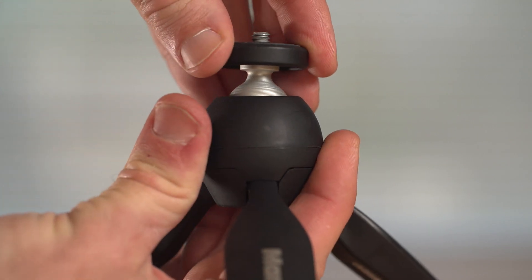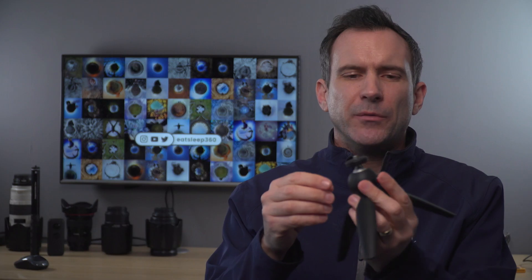It closes together fairly compact, but I wouldn't say this is a compact tripod and it's certainly not a pocket tripod. It does have an adjustable head, so if you are on uneven ground, you can easily adjust the horizon by pushing in this button here.